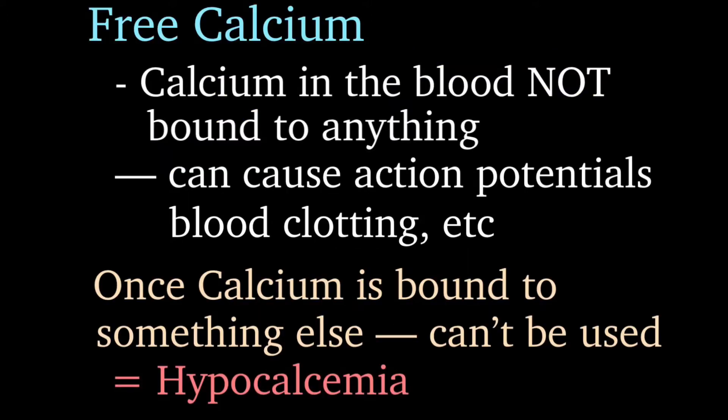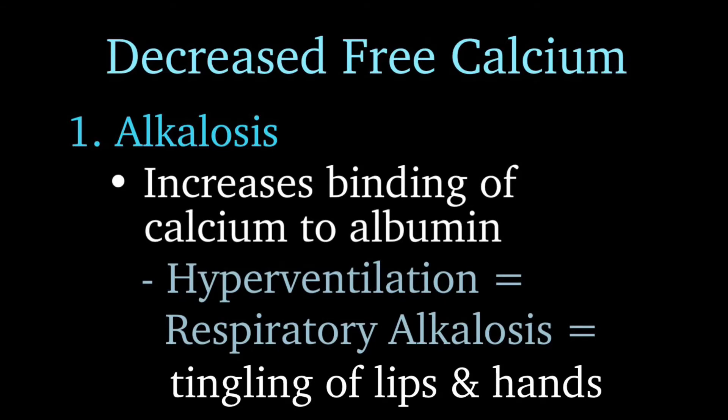Free calcium is calcium that's floating around in the blood, not bound to anything — this is the calcium that can actually be used by the body for action potentials and other needs. When we bind this calcium to proteins or albumin, we can't use it anymore and it drops our blood calcium levels. Alkalosis can decrease our free calcium levels by increasing the binding of calcium to albumin, which leaves little free calcium.